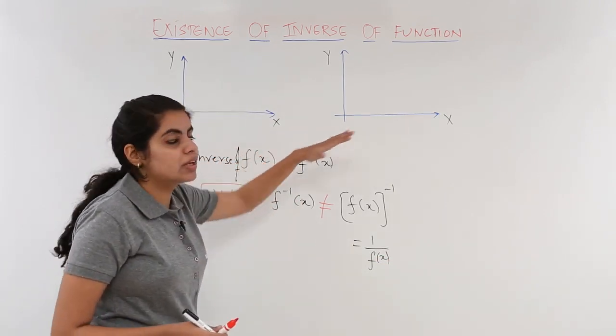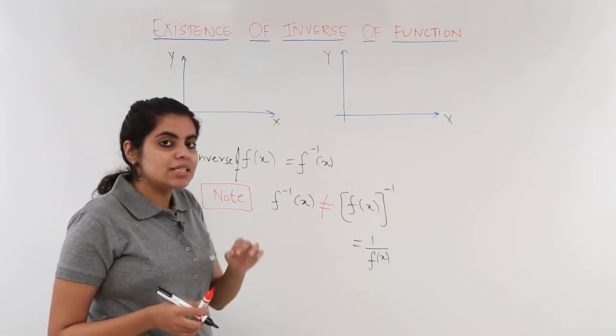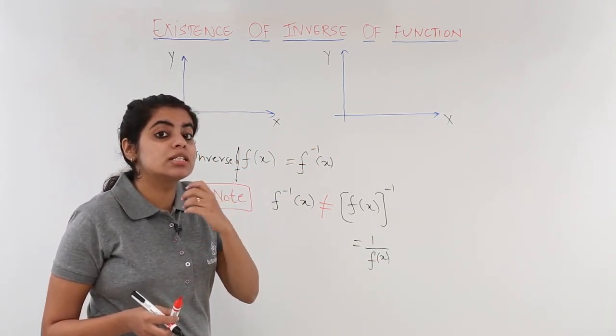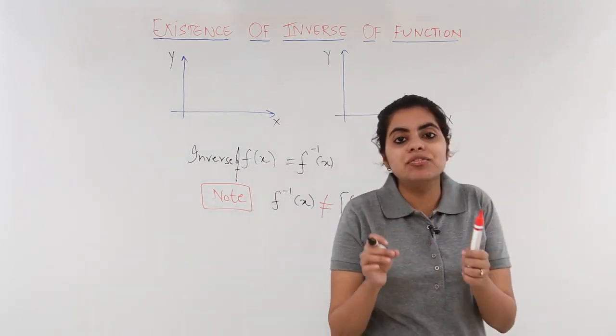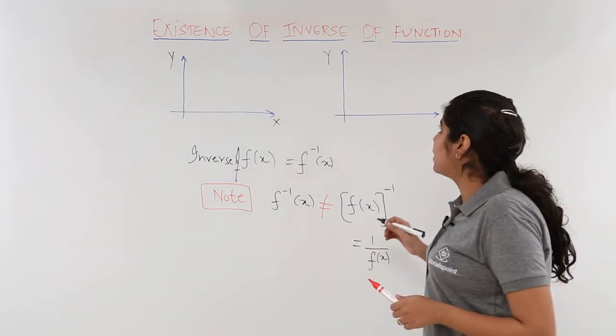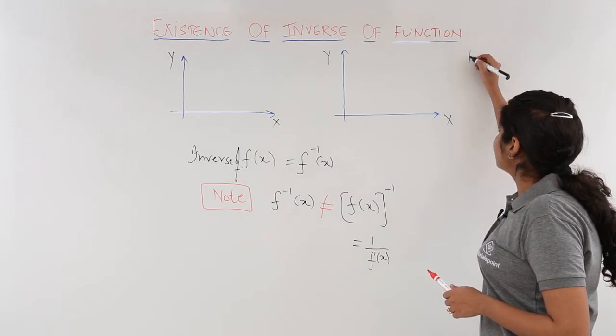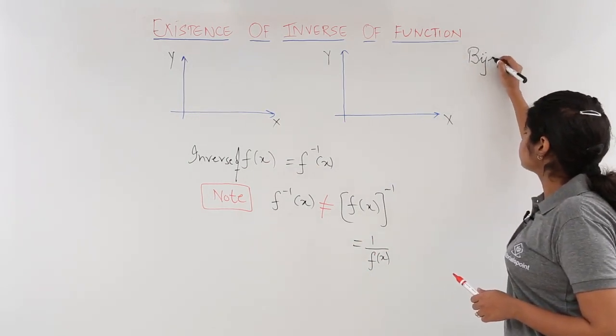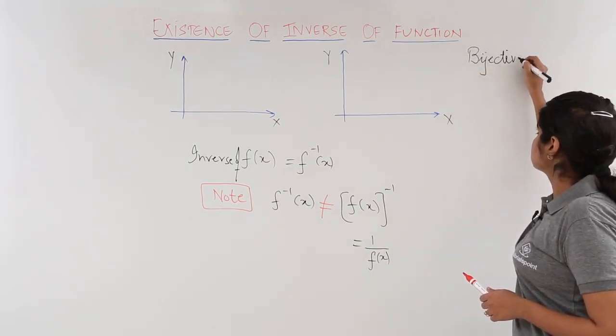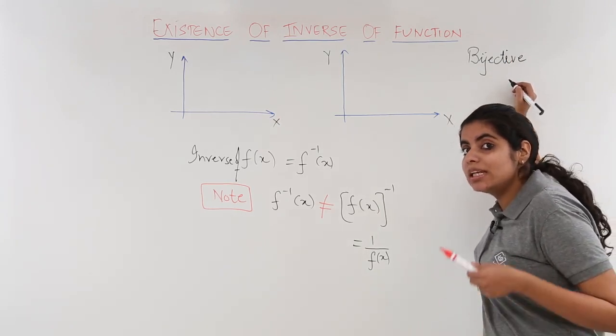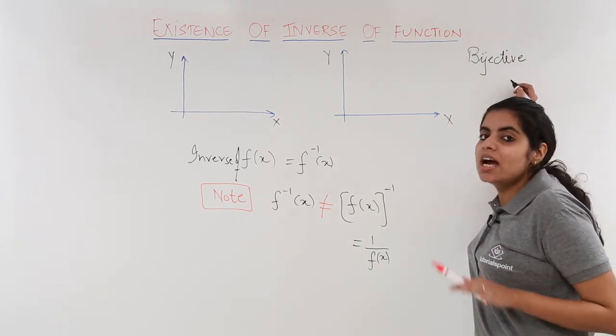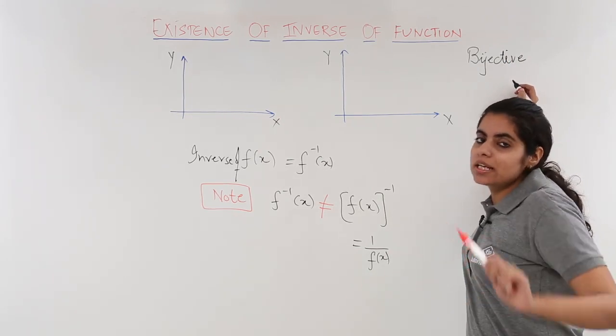Now, let's move on to the graphical analysis. That means inverse of a function would exist when inverse of a function exists if and only if the function is what? It is a bijective function. If I have a bijective function only then the inverse would exist otherwise it would not exist.